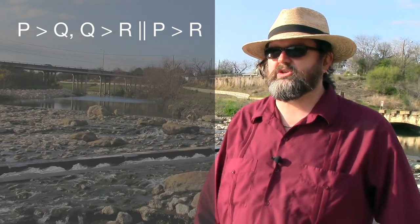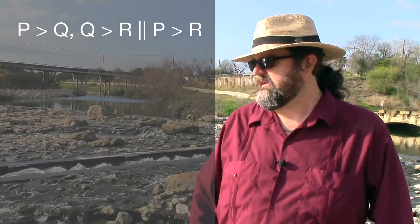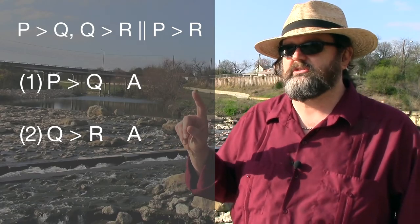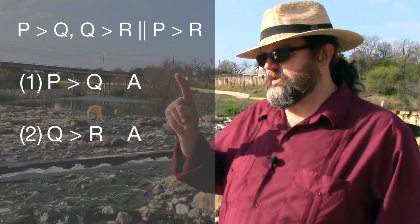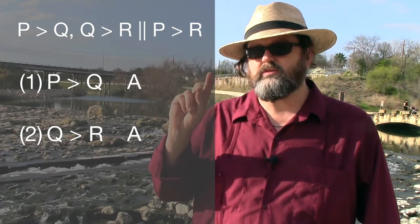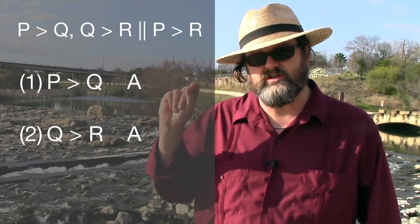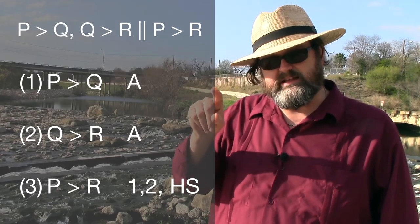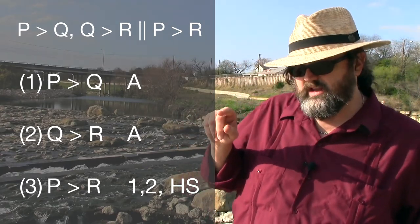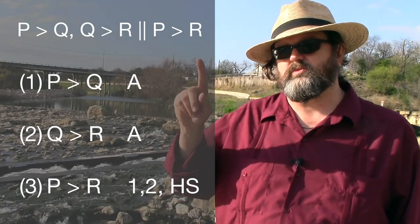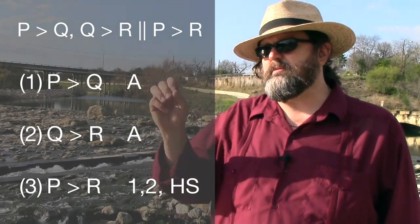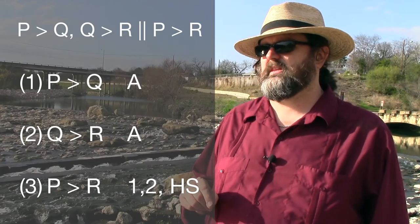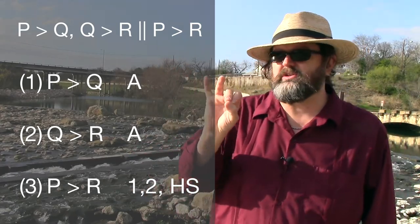Setting up our sequent and following our formalization rules, we have p greater-than-symbol q, comma, q greater-than-symbol r, two vertical lines, p greater-than-symbol r. In the formal argument, line one is p greater-than-symbol q with citation A, line two is q greater-than-symbol r with citation A, and the inference is p greater-than-symbol r. Following rule 13, the citation is one comma two comma space, and for hypothetical syllogism we abbreviate the rule as HS.